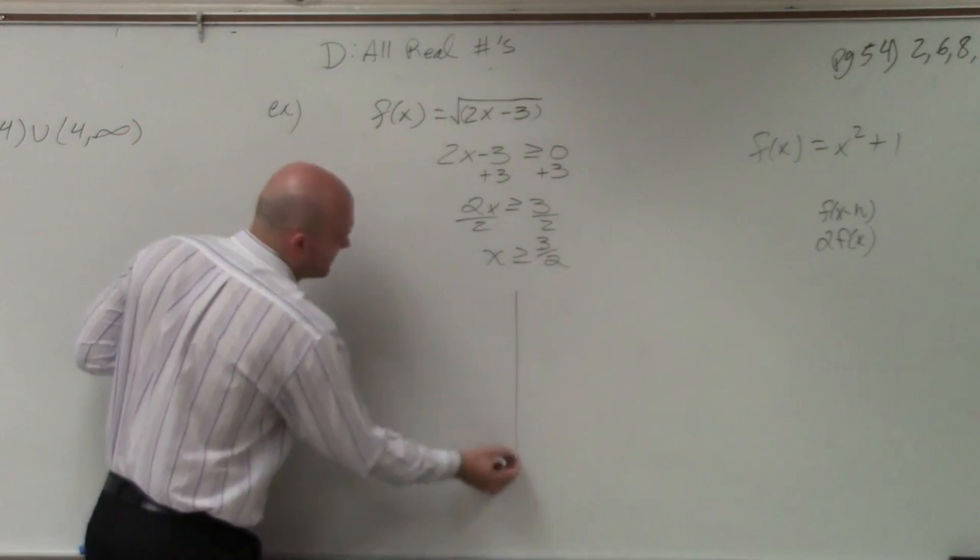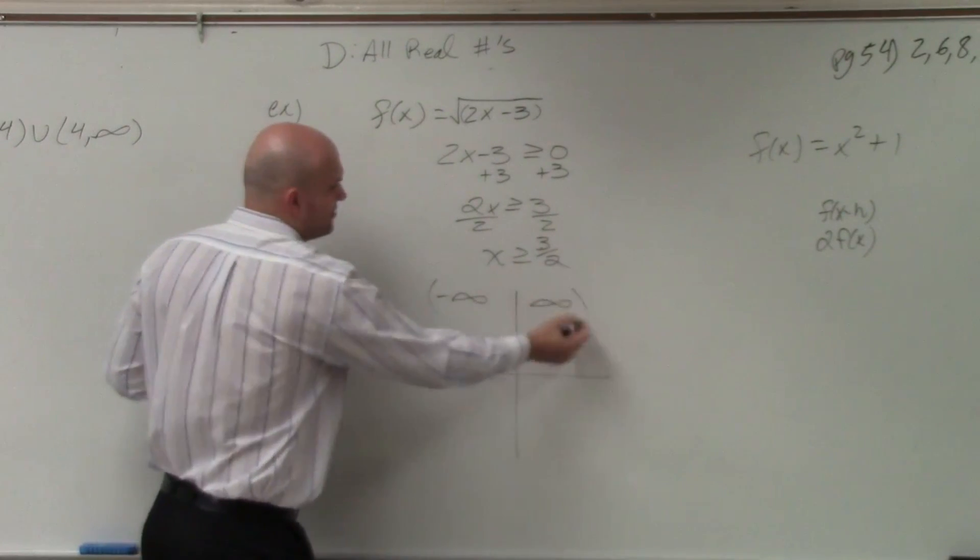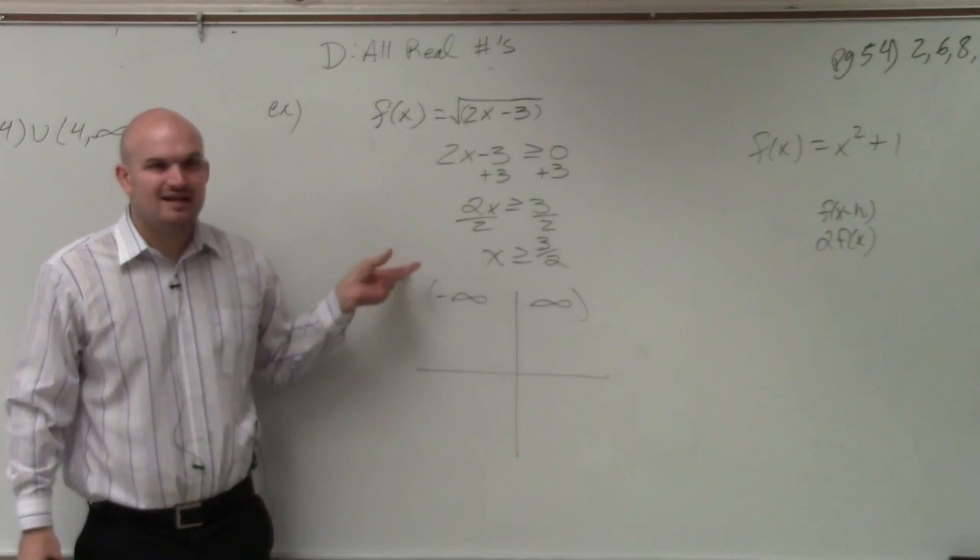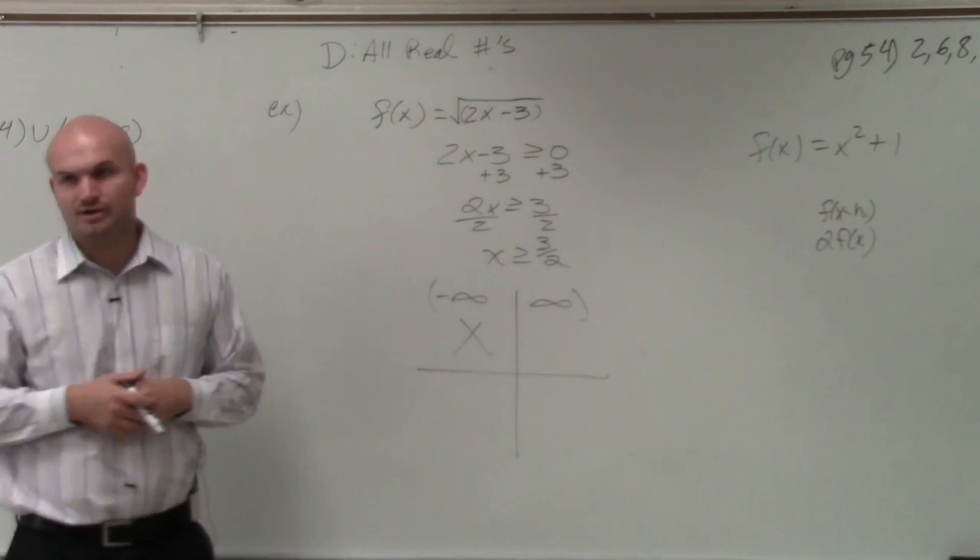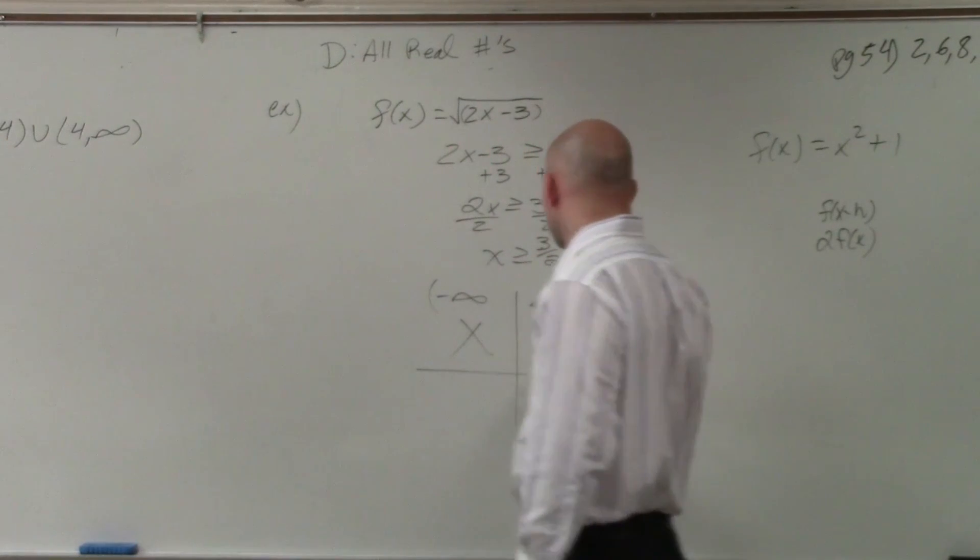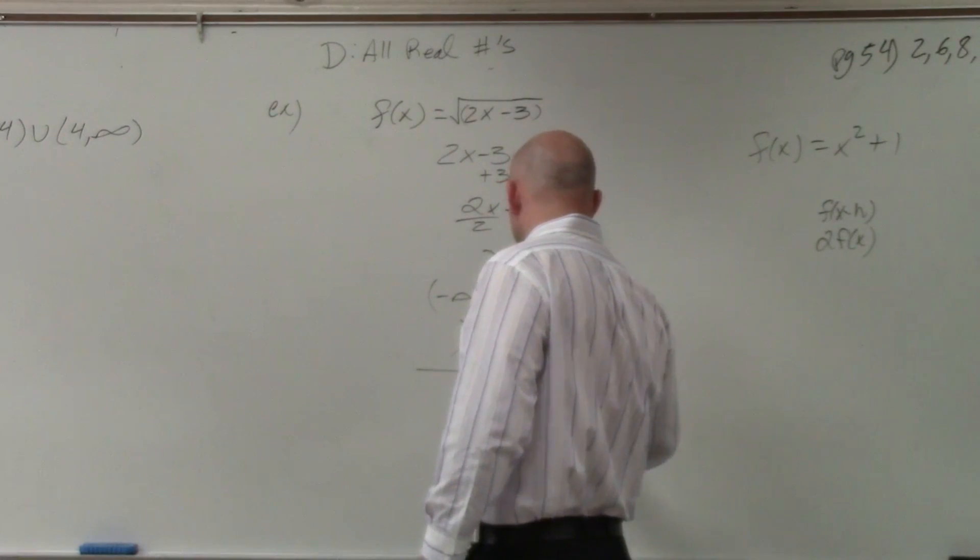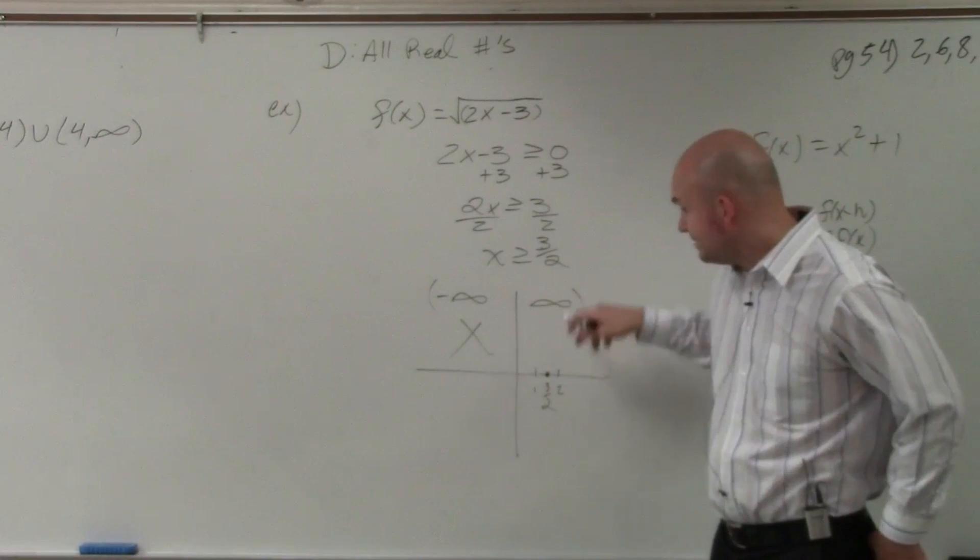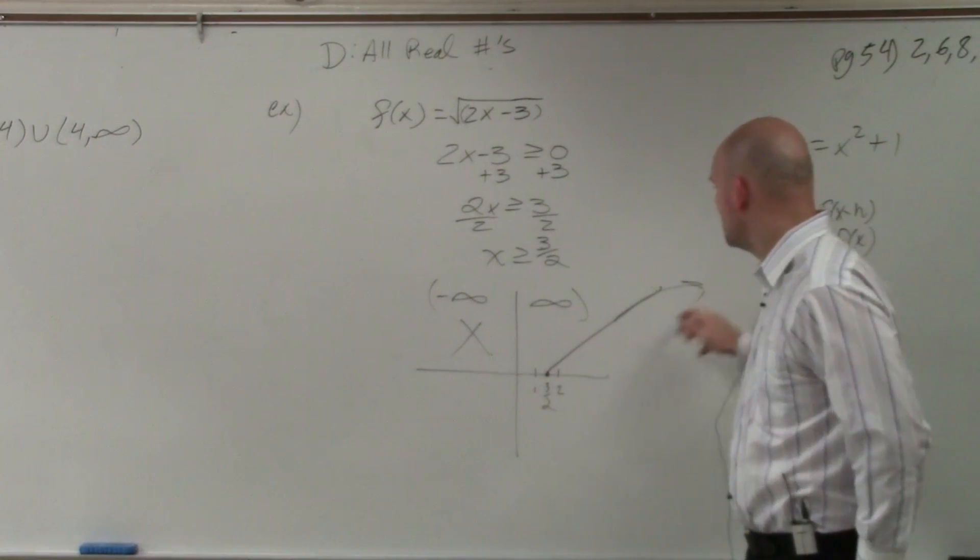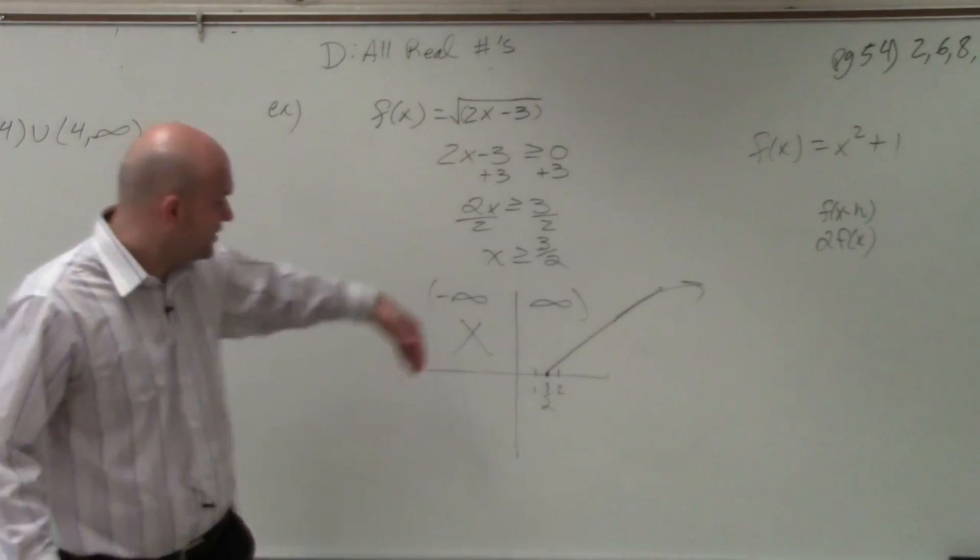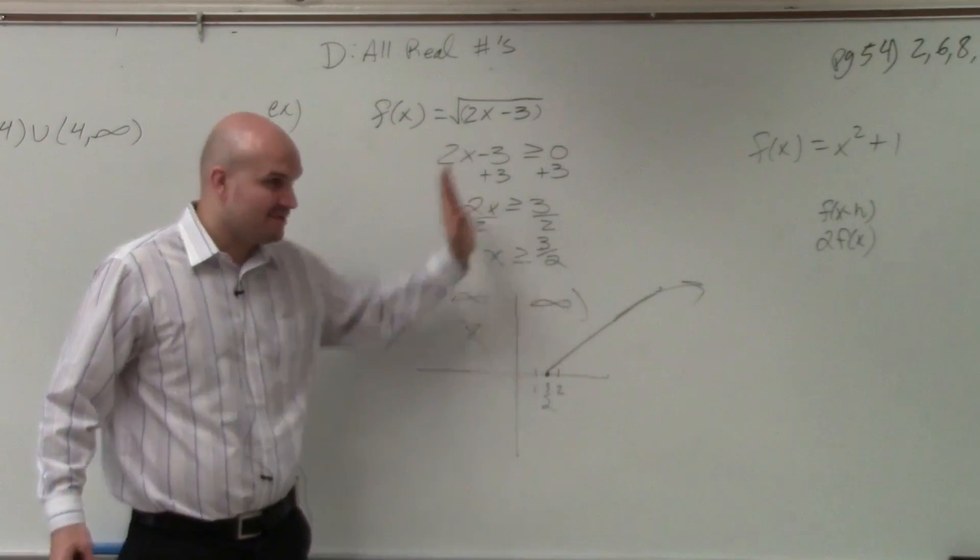So if you look, if you kind of think about this, if you have negative infinity to infinity, right, that's your implied domain. But we can't have any negative numbers, right? Can't have any negative numbers. So that whole side doesn't even work over there, at least, because x has to be greater than or equal to 3 halves. So 3 halves is right around here, or is right there. My graph has to be equal to 3 halves. It has to be equal to 3 halves or to the right. So anything to the left of 3 halves is not within the domain.